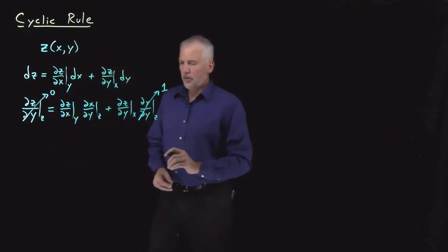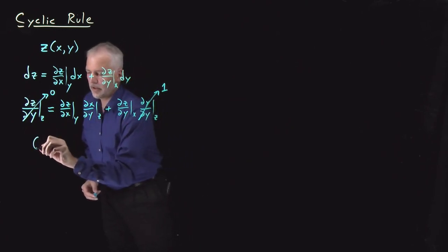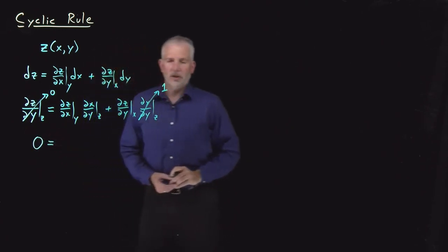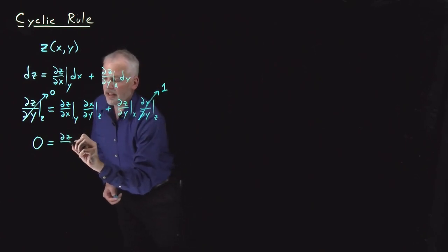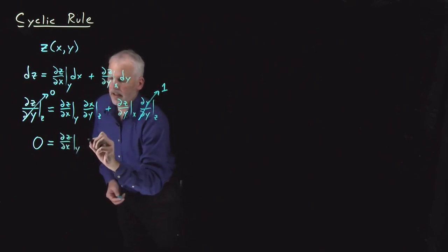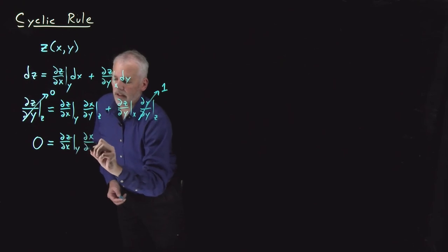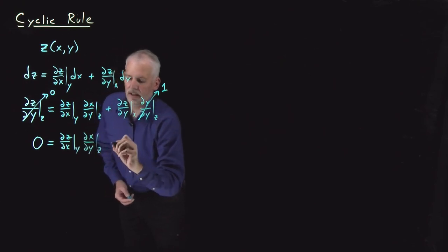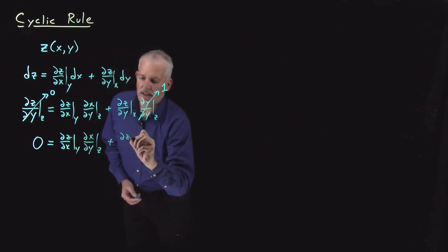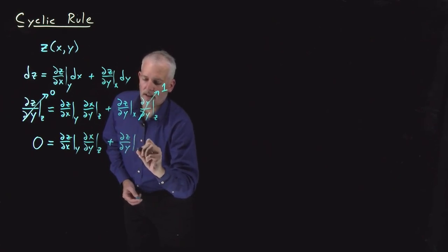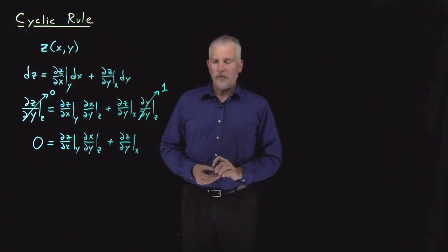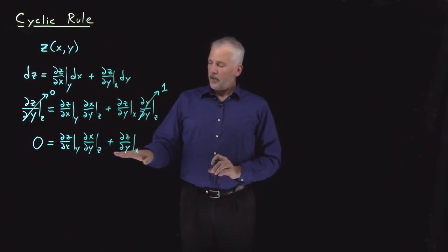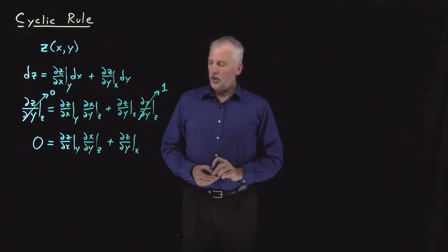So with those two derivatives converted to numbers, we can rewrite this equation. 0 is equal to ∂z/∂x at constant y, ∂x/∂y at constant z, plus ∂z/∂y at constant x.